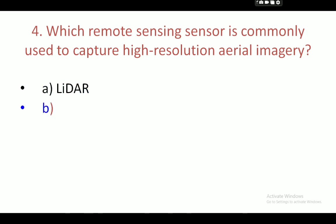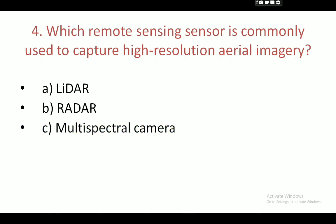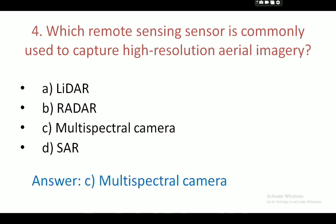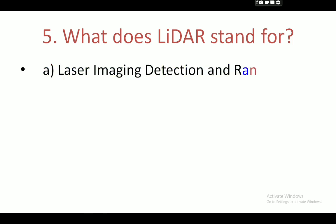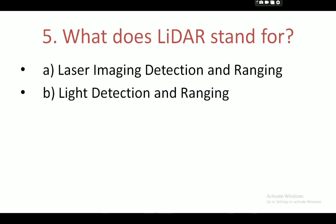Next question: which remote sensing sensor is commonly used to capture high-resolution aerial imagery? Your options are: A — LiDAR, B — radar, C — multispectral camera, or D — SAR. Your correct answer is C — multispectral camera.